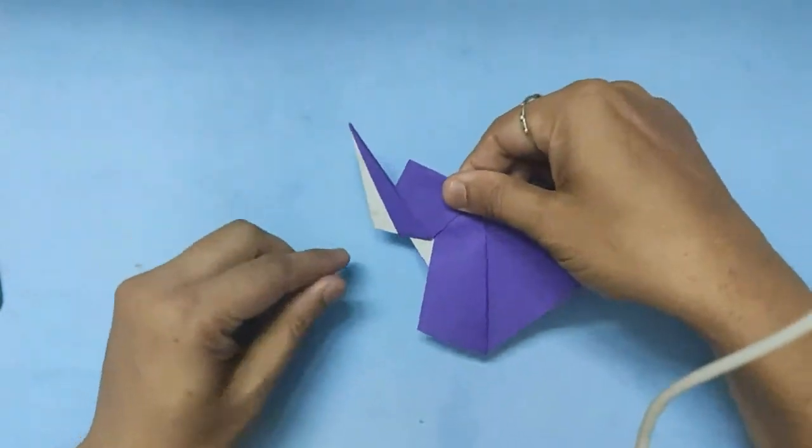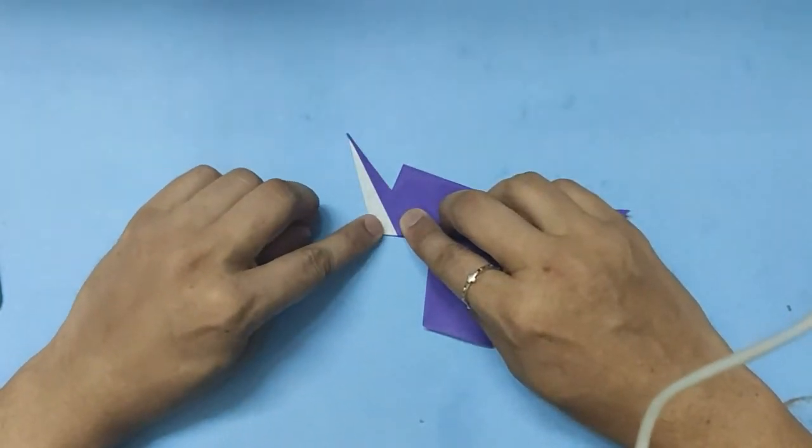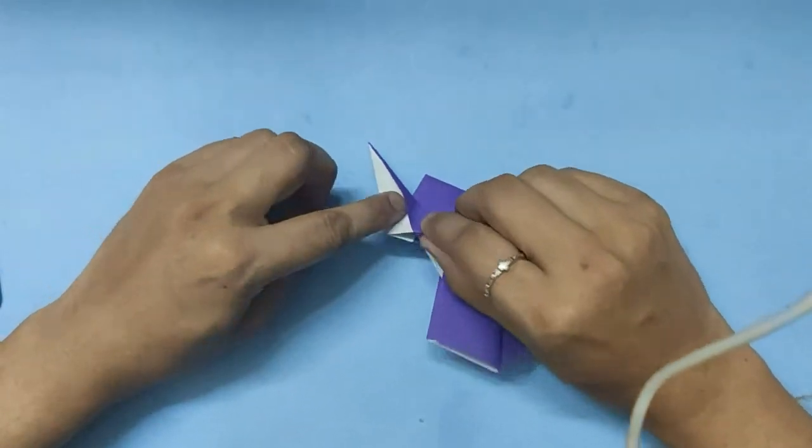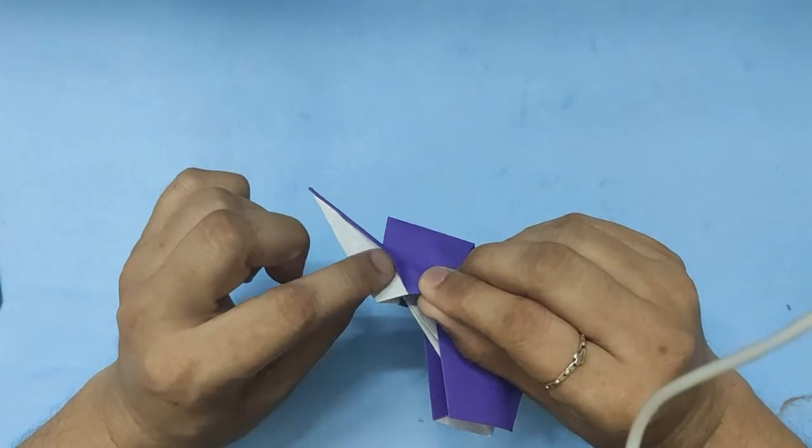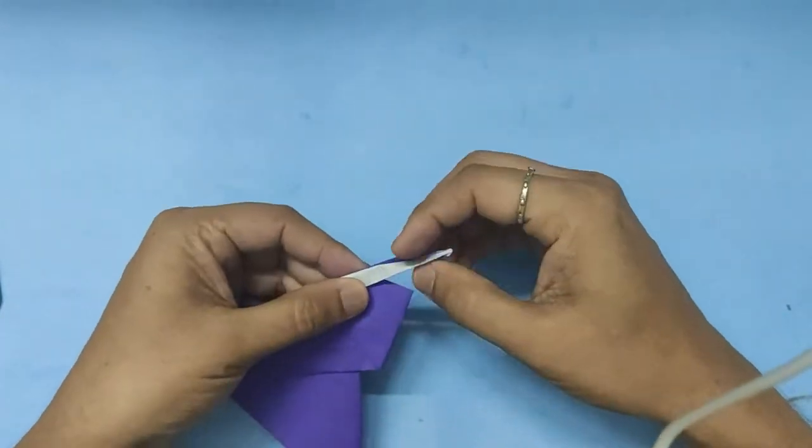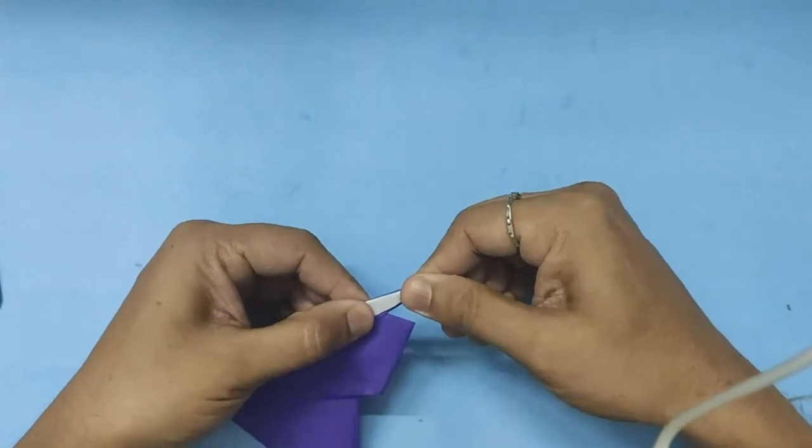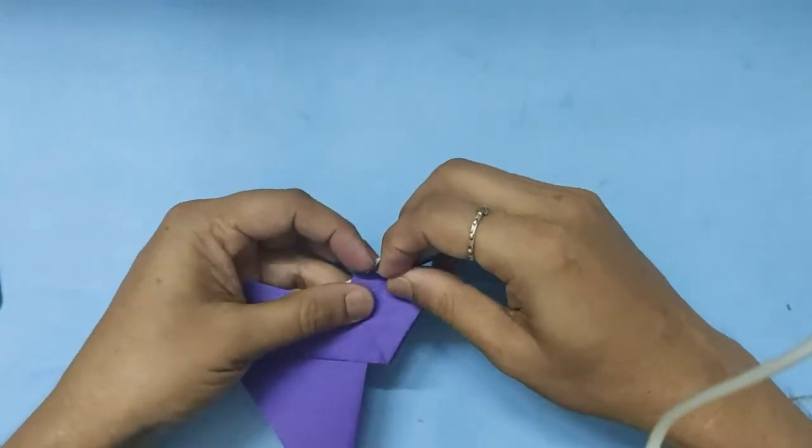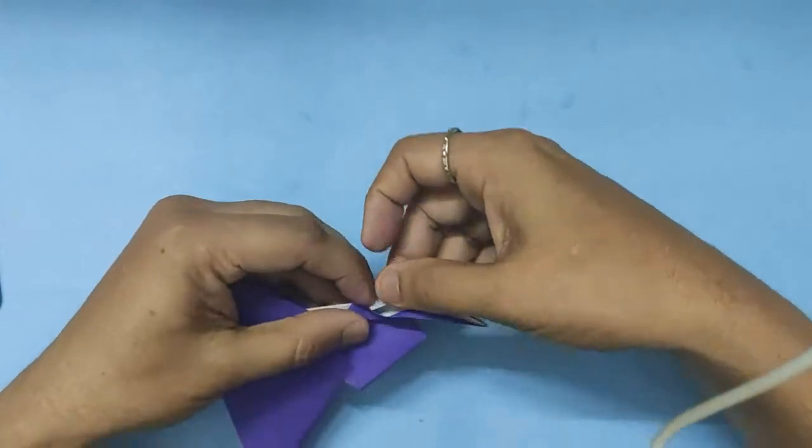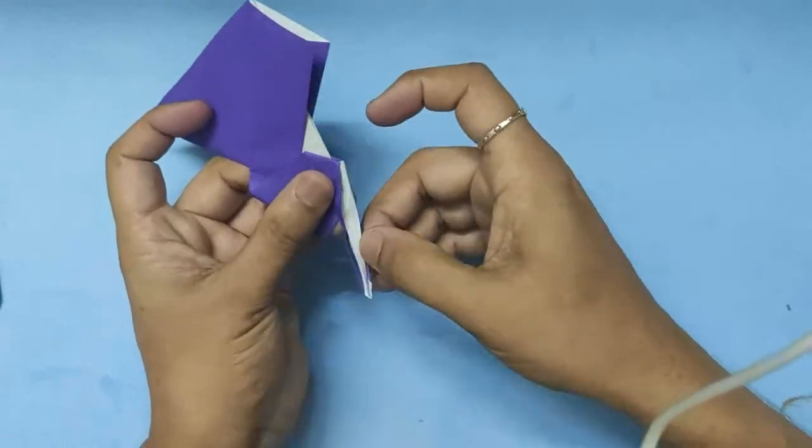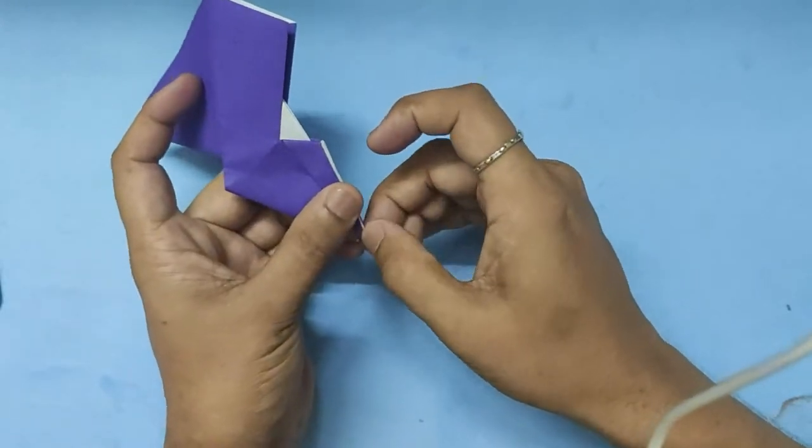Now this white part, we will fold it and tuck it inside there. We will push it inside that pocket. So fold it along that white strip. Press it, lift the blue part and push the white part inside. So we get a nice slender trunk.